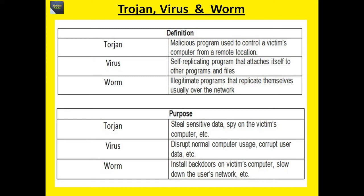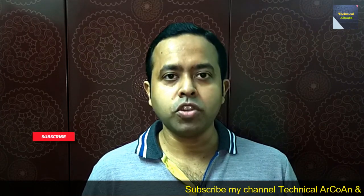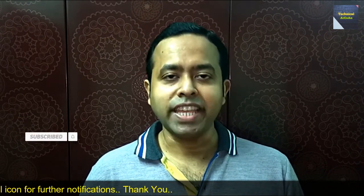To summarize the distinction: a Trojan is a malicious program used to control a victim's computer from a remote location; a virus is a self-replicating program that attaches itself to other programs and files; a worm is a program that replicates itself, usually over the network. Their purposes differ — Trojans steal sensitive data, viruses disturb normal computer usage and corrupt user data, and worms install backdoors or slow down the user's network. I hope you have understood today's topic. For more videos, keep watching my channel Technical Archway. Thank you and bye bye.